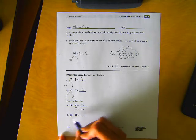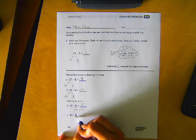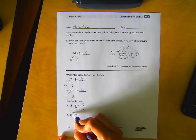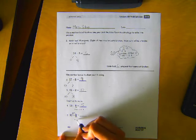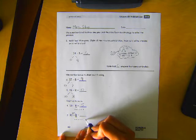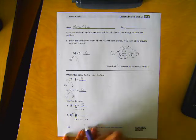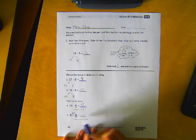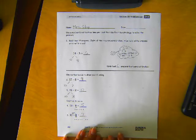Okay, 15 minus 8. So we're going to count from 8. We're going to count up to 15. So we have 8, 9, 10, 11, 12, 13, 14, 15. That took 7 dots. So 15 minus 8 equals 7.